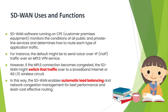For example, if a customer has a default setting to send Voice over IP traffic over the MPLS VPN service, whatever VoIP calls happen will by default be routed to the MPLS VPN service. However, if for some reason the MPLS connection becomes congested, the SD-WAN software might switch that VoIP traffic to the broadband internet connection or a 4G LTE wireless circuit. This is similar to when working from home — if the home Wi-Fi doesn't work correctly, we might manually connect to a mobile hotspot.